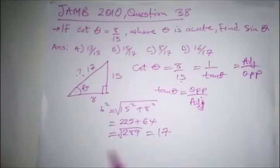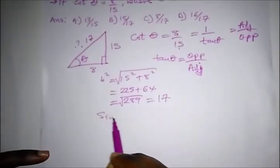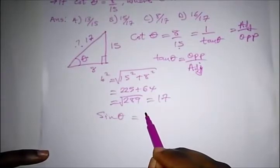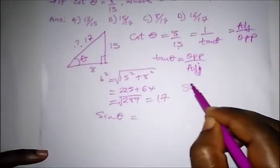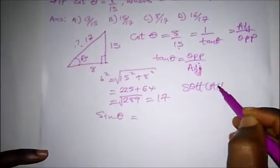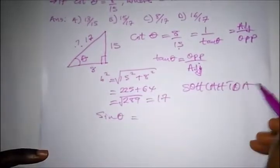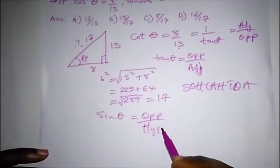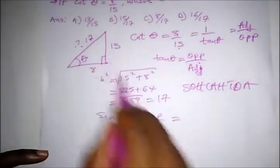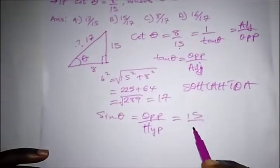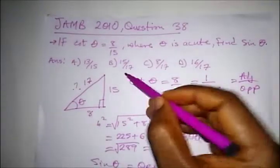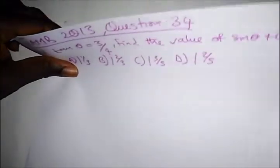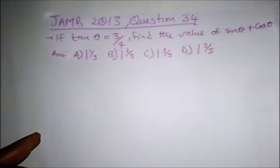Now we are set to find sin θ. Remember SOH-CAH-TOA — sin θ is opposite over hypotenuse. Our opposite is 15 and our hypotenuse is 17, so sin θ = 15 over 17. The correct option here is option B. We have another question from JAMB 2013, Question 34.